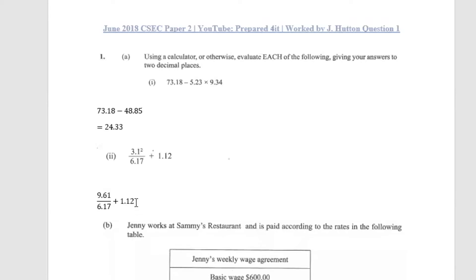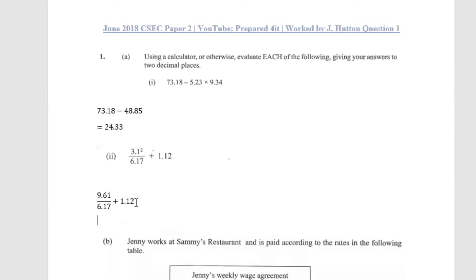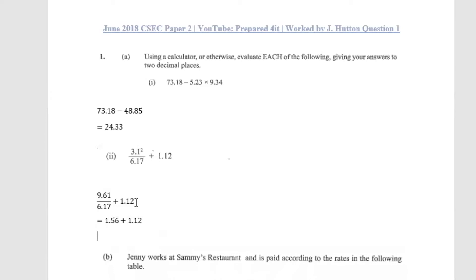The final answer is 2.68. We do 9.61 divided by 6.17, which gives 1.56, then add 1.12 to get 1.56 plus 1.12 equals 2.68 as our final answer.